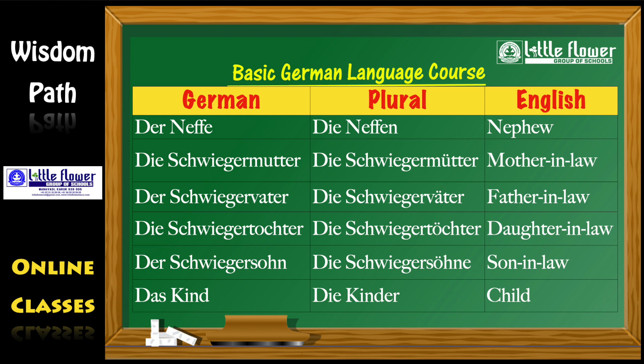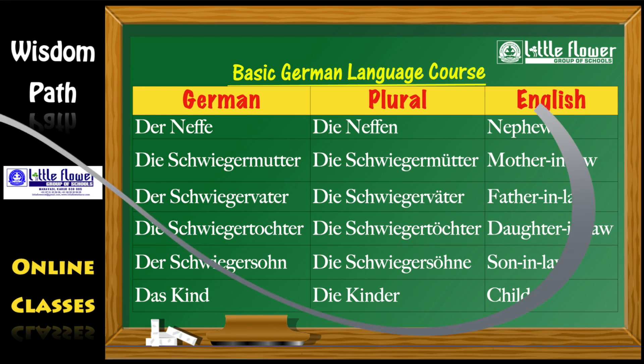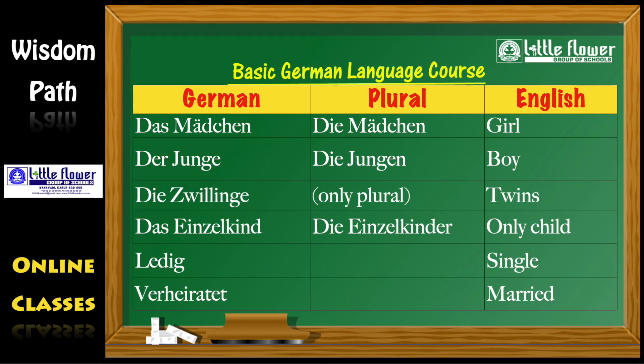das Kind, die Kinder. das Mädchen, die Mädchen. der Junge, die Jungen. die Zwillinge. das Einzelkind, die Einzelkinder. ledig. verheiratet.